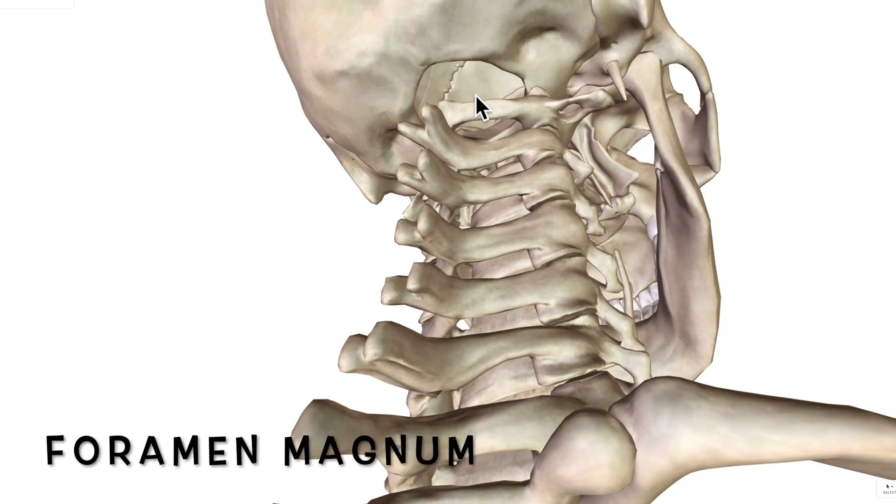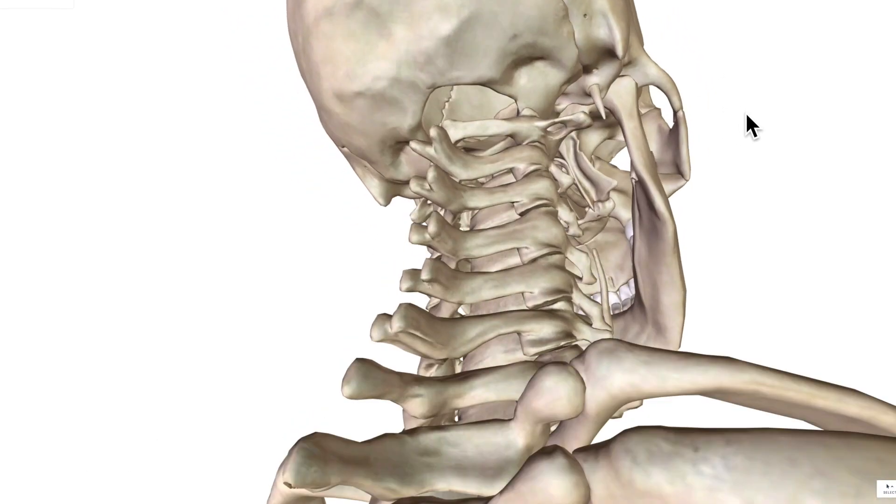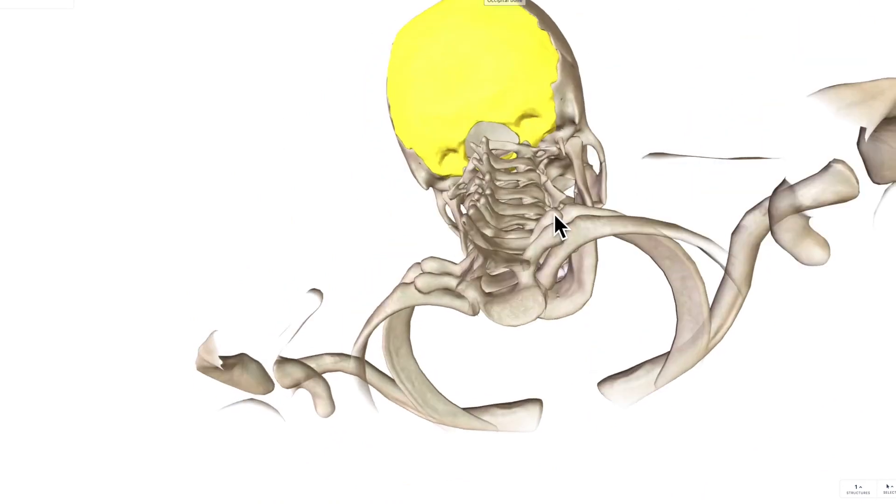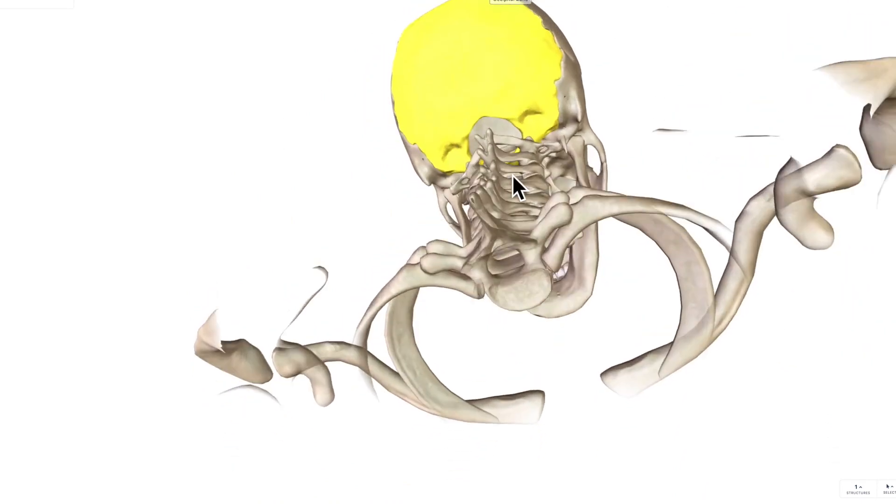Now in anatomy, the way that we're meant to state bony features and foramina is to say the feature and then say of what bone it's from. So for example, the foramen magnum of the occipital bone. You can see the occipital bone is forming that foramen.